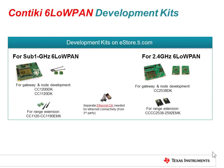TI offers many development kits to help you get started. First, you will need to choose your frequency band — there is a 2.4GHz option or a sub-1GHz option. Secondly, depending on your application, whether it's a node or an edge router, you will need to choose the appropriate development tool. Lastly, for range extenders, there is also a kit available for either 2.4GHz or sub-1GHz.